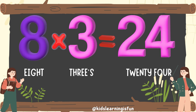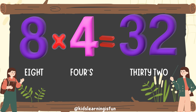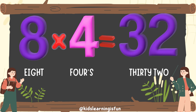Eight threes are twenty-four. Eight fours are thirty-two.